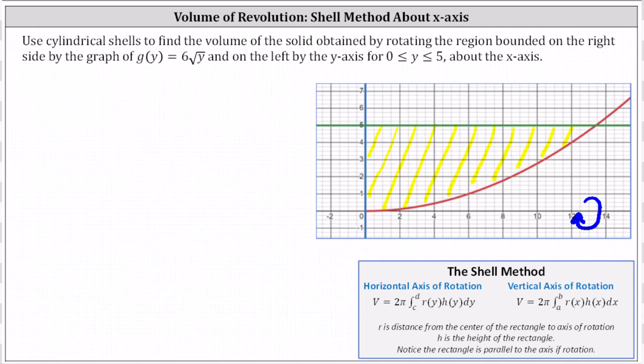When using the shell method, we always want to sketch a representative rectangle that represents one shell or one tube of the volume when rotated about the given axis. The representative rectangle is always parallel to the axis of rotation. When using the washer or disk method, the representative rectangle is always perpendicular to the axis of rotation.